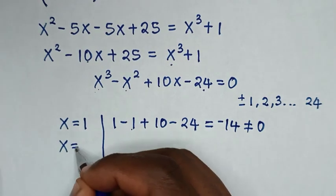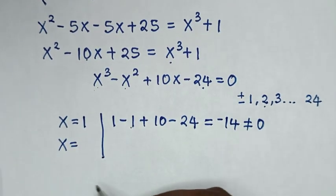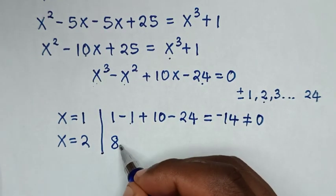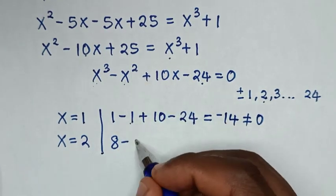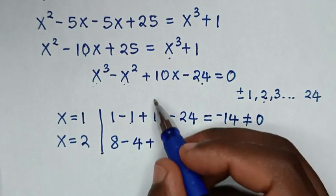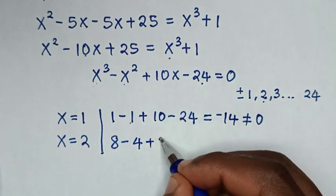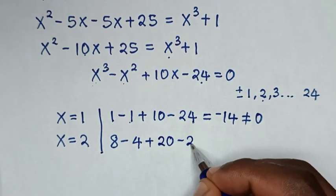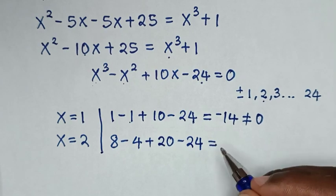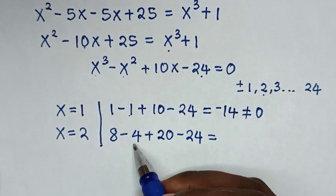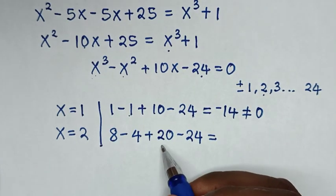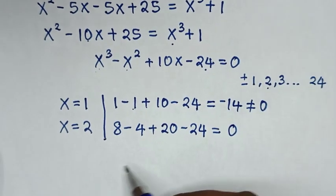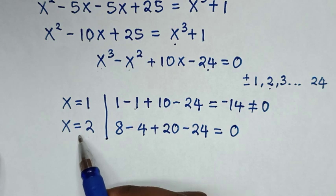Let's test x = 2. It will be 2³ which is 8, minus 2² which is 4, plus 10 times 2 which is 20, then minus 24. So 8 minus 4 is 4, plus 20 is 24, and 24 minus 24 equals 0. So x = 2 satisfies our equation.